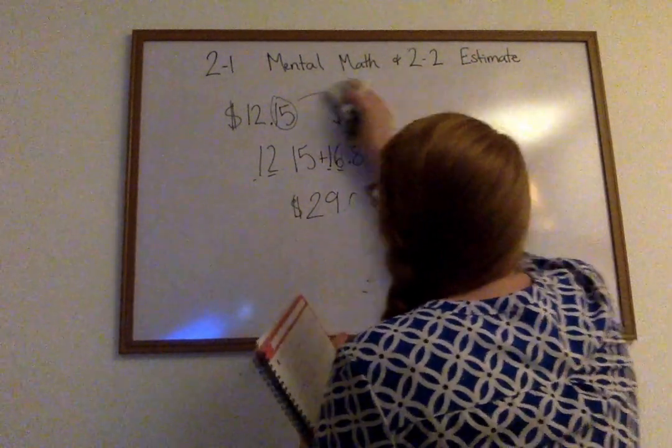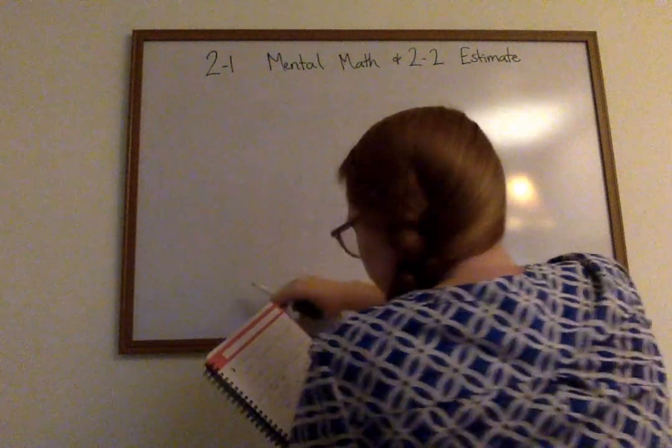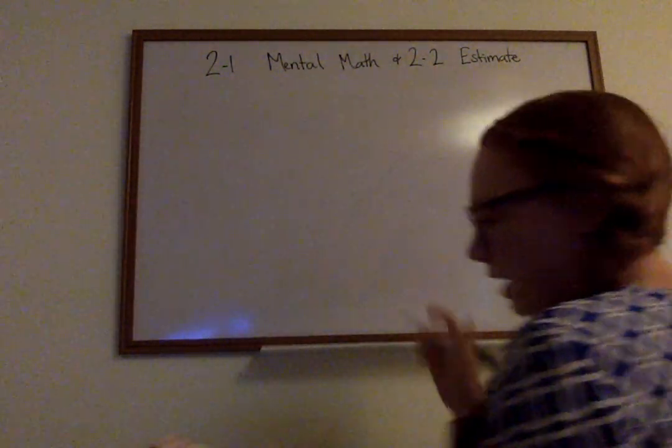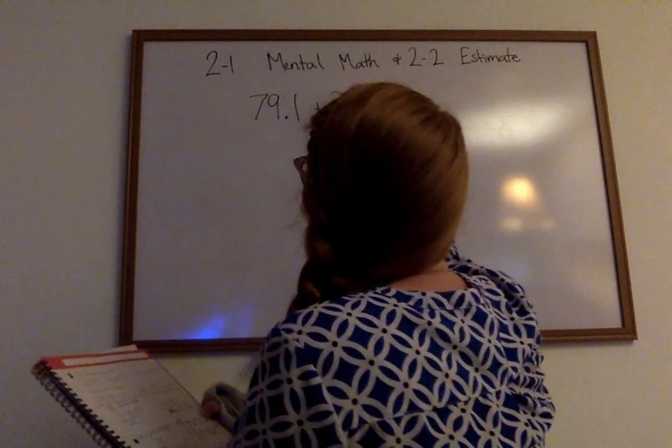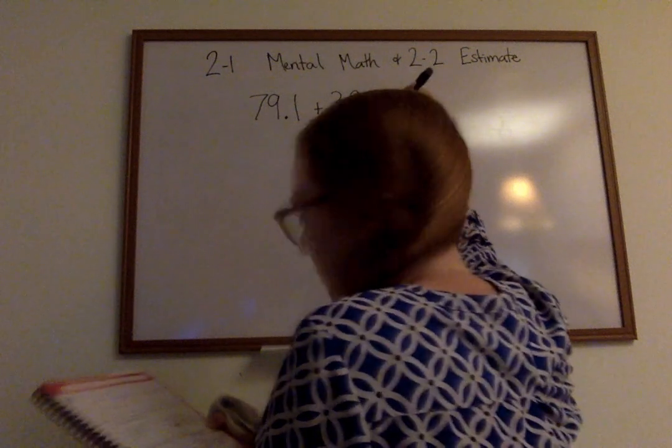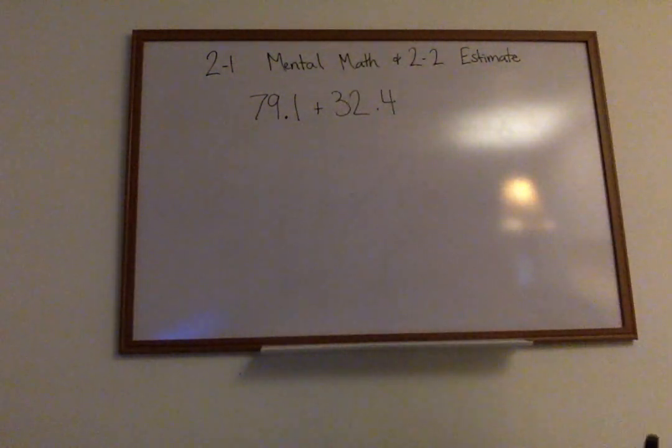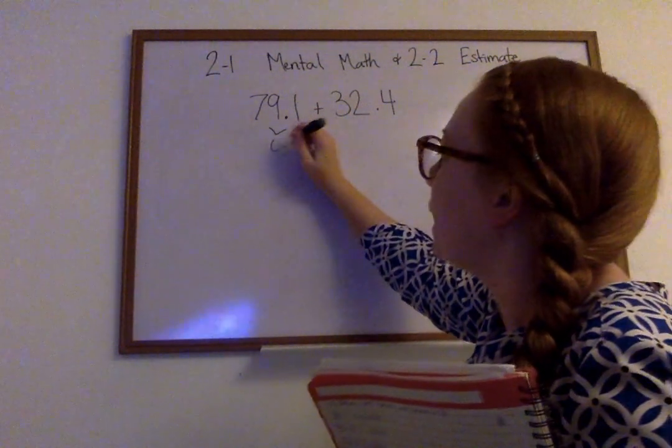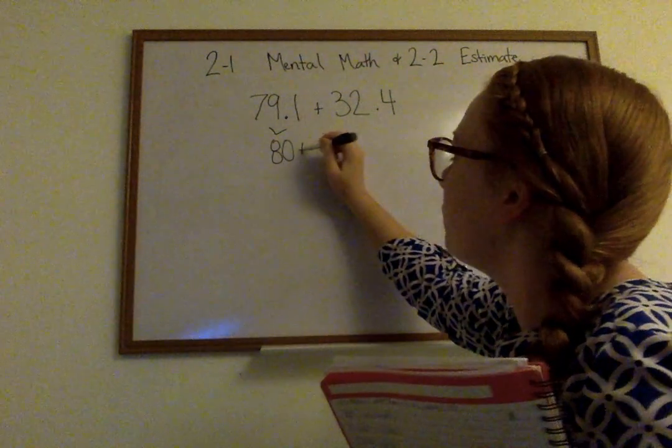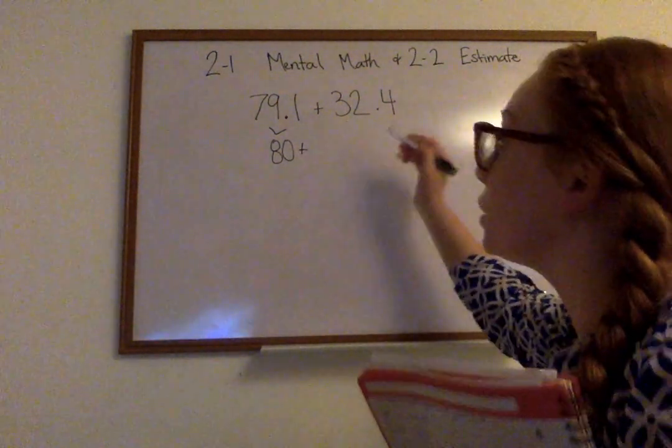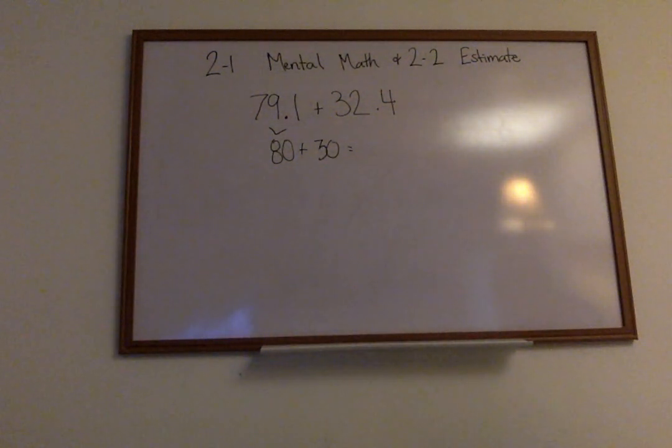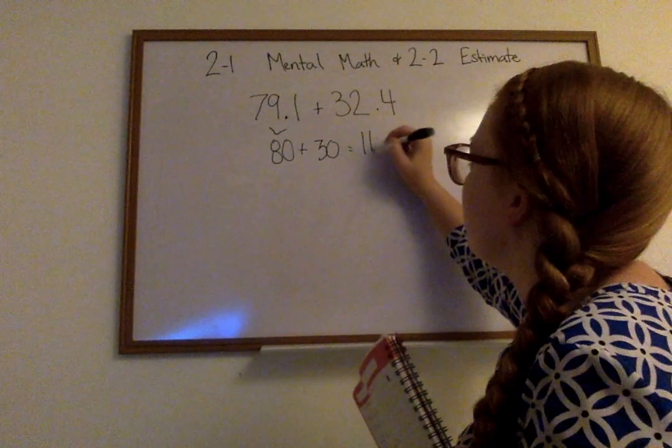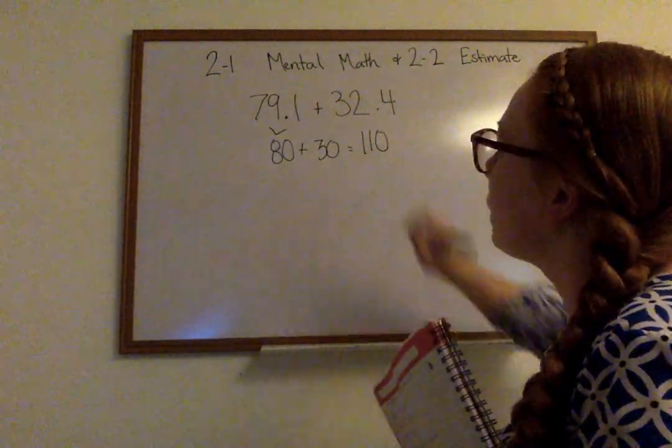Let's look at 2-2 now where it says estimate. So when it says estimate, things are going to look a little different. So I have 79.1 plus 32.4 and it wants me to estimate. So I'm going to round up or down depending on what the number looks like. 79 is close to 80 so I'm going to round it up to 80. 32 is close to 30 so I'm going to round it down to 30. This is my rough estimate. 80 plus 30 is then going to give me 110. That right there is my rough estimate.